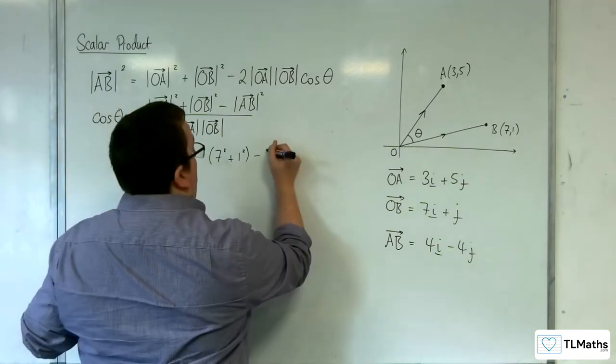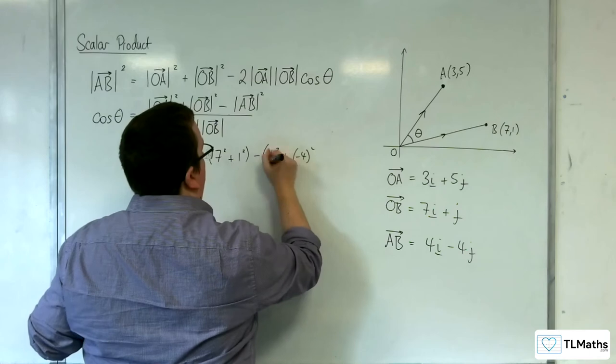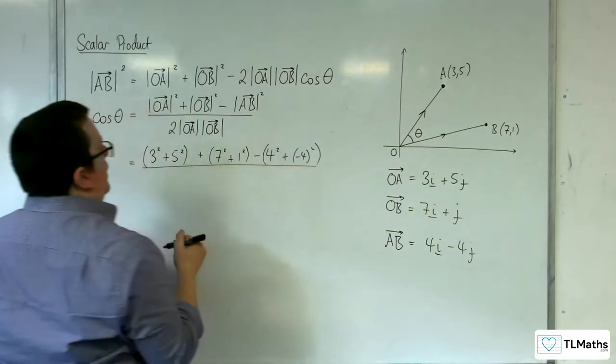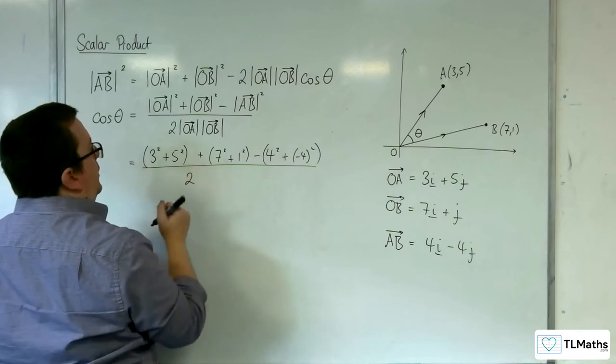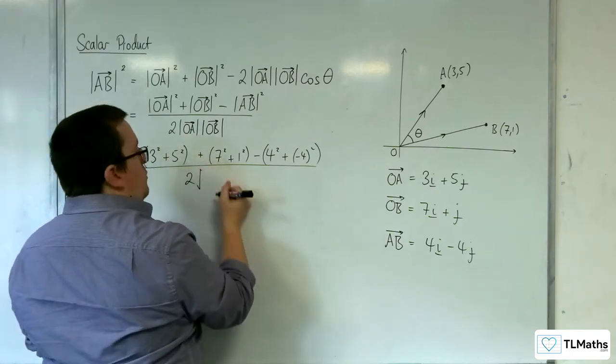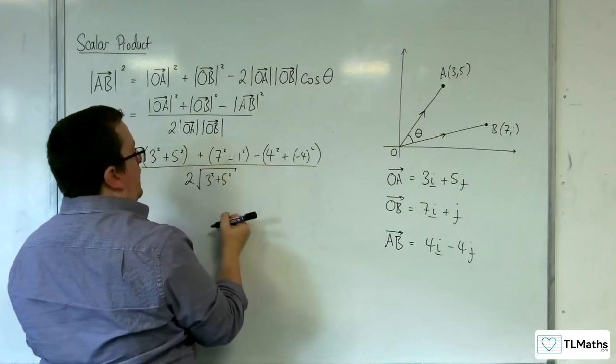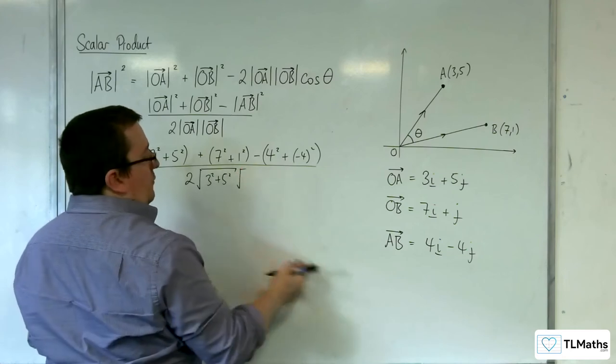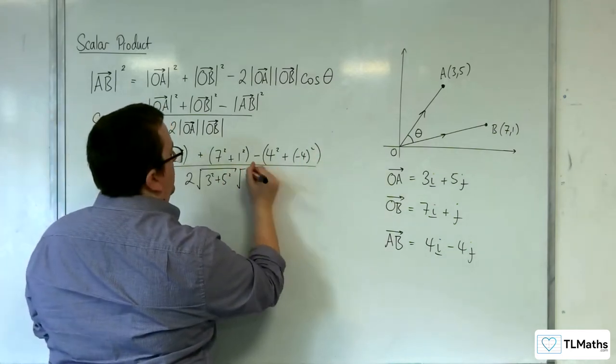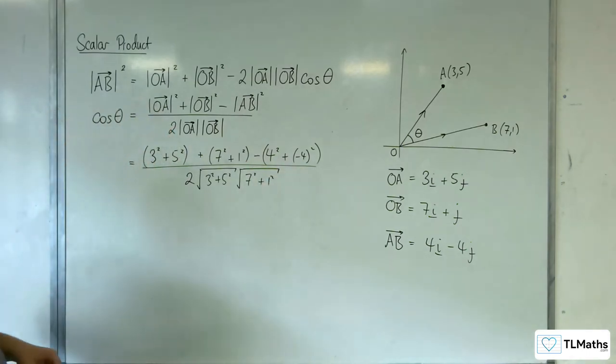So we would have 4 squared plus negative 4 squared, all over 2 lots of the length of OA, which is the square root of 3 squared plus 5 squared, times the length of OB, which is 7 squared plus 1 squared.